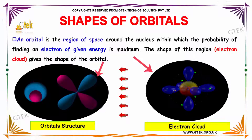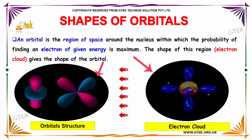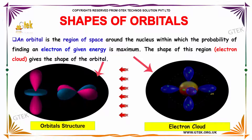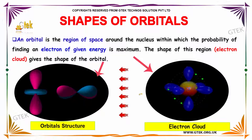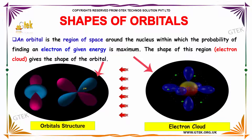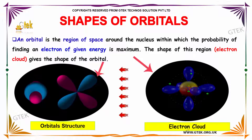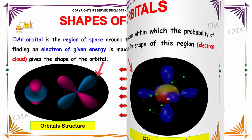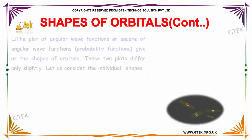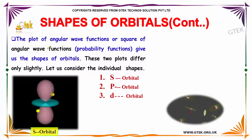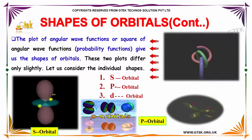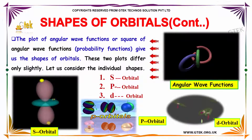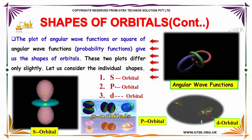The shape of this region, that's called electron cloud, gives the shape of the orbital. Here is the orbital structures, and here is the electron cloud. The plot of angular wave function, or square of angular wave function, gives us the shape of the orbital. These two plots differ only slightly.